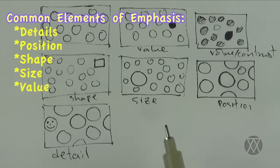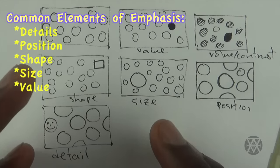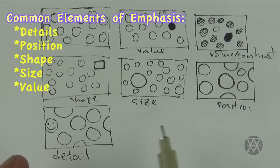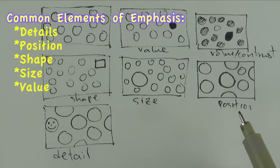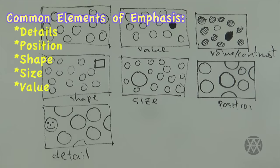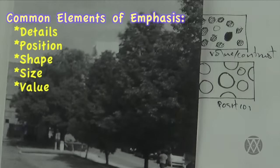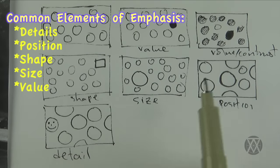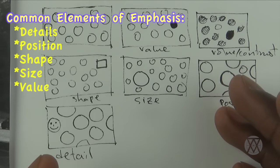Here we're using size, here we're using shape, here we're using position, here using value contrast - the deepest value against the lightest value. Here we're using value as well, and of course you can use color.